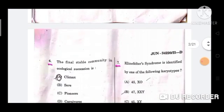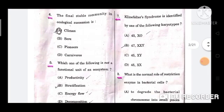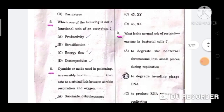Next question, question number 4: The final stable community in ecological succession is? The correct option is option A, climax. Next question, question number 5: Which one of the following is not a functional unit of an ecosystem? Correct option is option B, stratification.